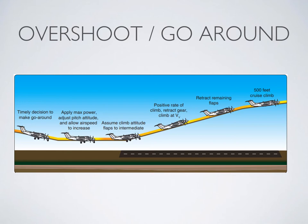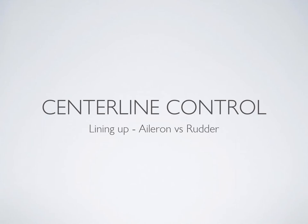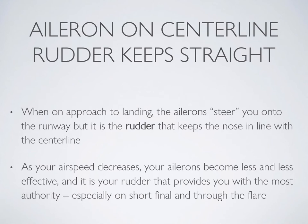Now that we've touched on overshoots, let's look at what else can get messy in the landing. The first thing you'll run into once you've turned base to final is centre line control — how to get it and how to keep it. This is critically important to obtain way back in the approach and to hold it all the way down. Aileron steers us onto the runway, but it is the rudder that keeps the nose in line with the centre line. As your airspeed decreases, your ailerons become less effective and your rudder has most of the authority, similar to slow flight — especially on short final and throughout the flare.